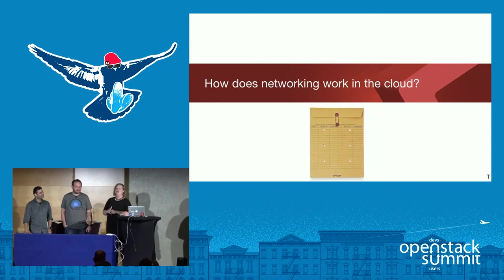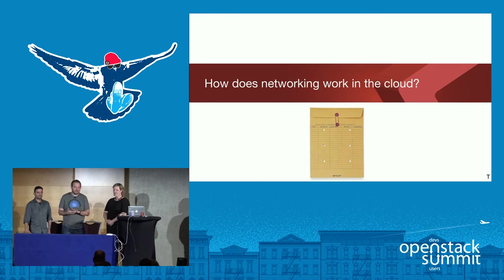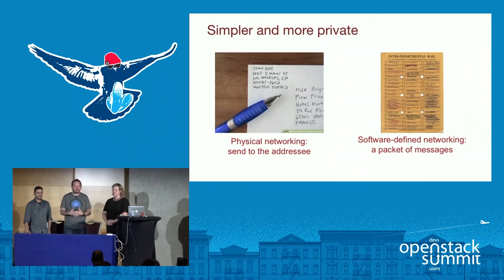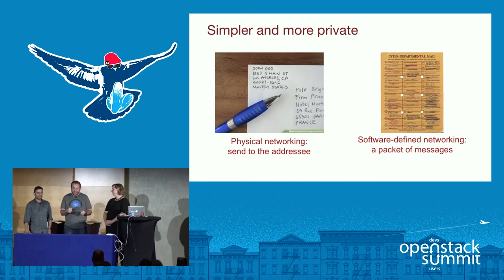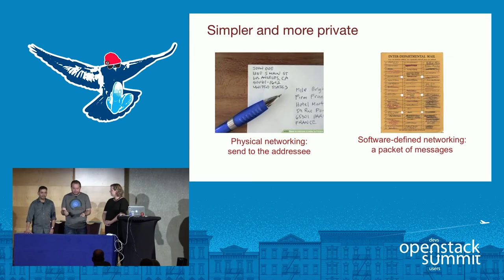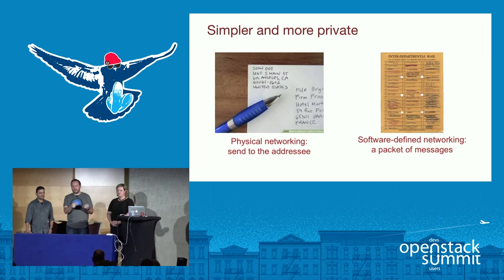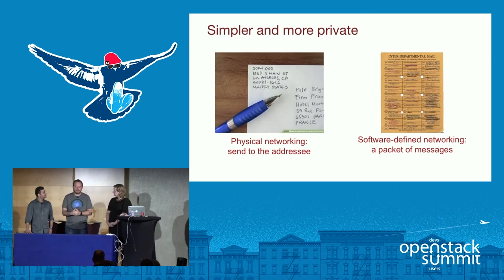Let's talk about how networking works in the cloud. This is often a very confusing spot, especially once you get into overlay networks, micro segmentation, and all those things. The best way to wrap around it is mail — which is actually a classic networking analogy. The IP address is the address. With physical networking, you write your letter, put it in the envelope with the to and from — just like your packet — and hand it to the mailman, which is your router. That's still how physical networking happens.